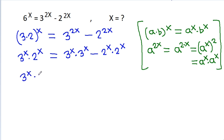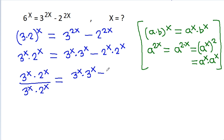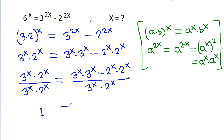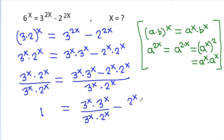Dividing both sides by 3 to the power x times 2 to the power x, it will be equal to (3 to the power x times 3 to the power x minus 2 to the power x times 2 to the power x) all divided by (3 to the power x times 2 to the power x). This splits into (3 to the power x times 3 to the power x) divided by (3 to the power x times 2 to the power x), minus (2 to the power x times 2 to the power x) divided by (3 to the power x times 2 to the power x).